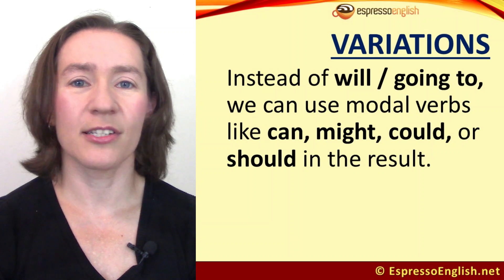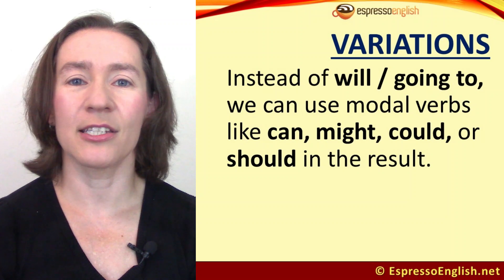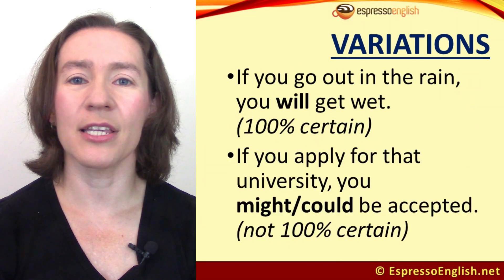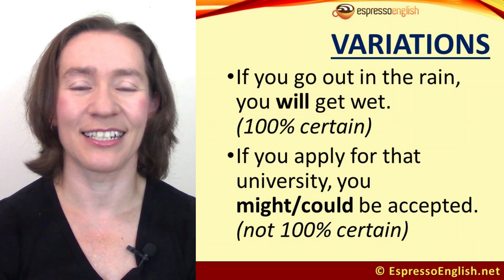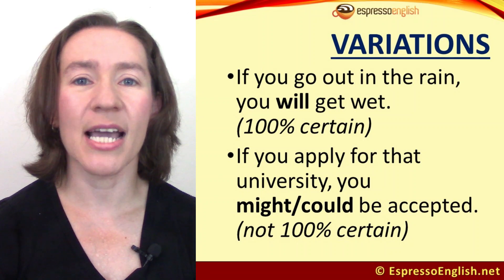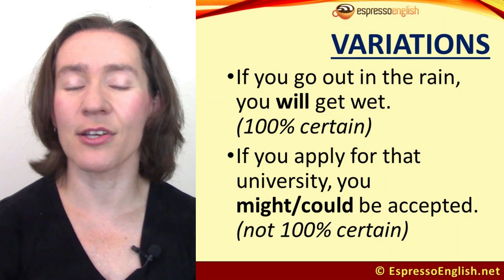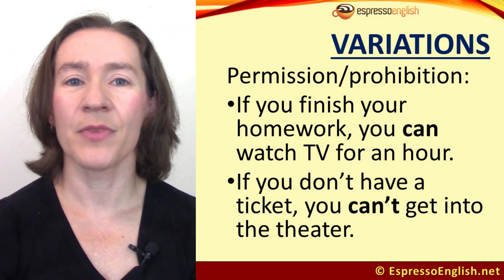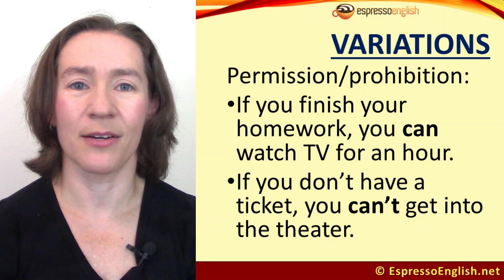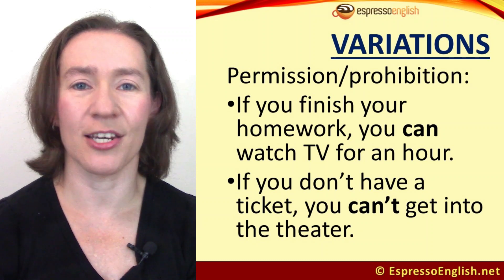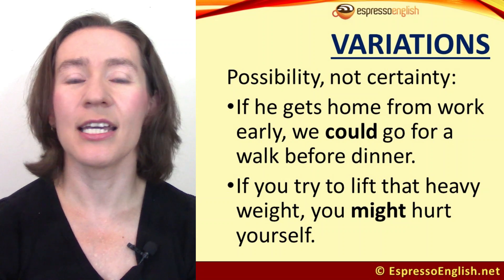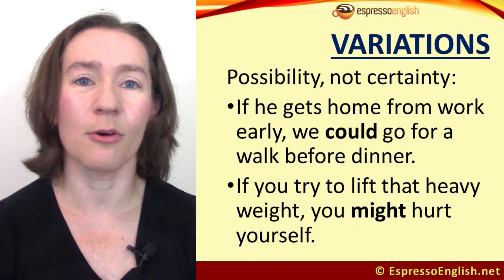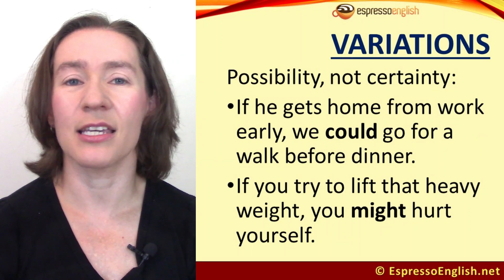We also have some alternative words to 'will' or 'going to' in the result. Instead of will or going to, we could use modal verbs like can, might, could, or should. Compare: 'If you go out in the rain, you will get wet' — that's 100% certain. 'If you apply to that university, you might or you could be accepted' — it's a possibility, but not 100% certain. We can use 'can' in the result to give permission or prohibition: 'If you finish your homework, you can watch TV for an hour.' 'If you don't have a ticket, you can't get into the theater.' We use 'might' or 'could' to express a possible result that is not a certainty: 'If he gets home from work early, we could go out for a walk before dinner.' 'If you try to lift that heavy weight, you might hurt yourself.'